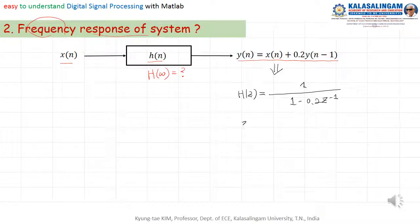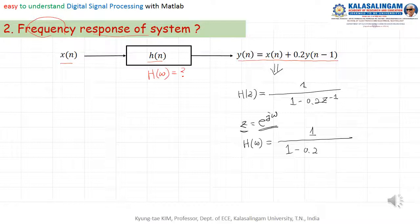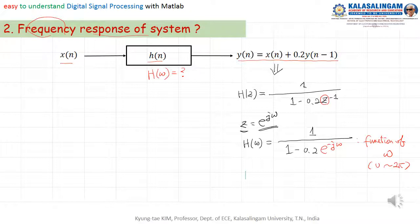Now, G means e to the power j omega. Therefore, we can substitute this instead of G. Therefore, H(omega) equals 1 divided by (1 minus 0.2 e to the power minus j omega). This is a function of omega, where omega means 0 to 2 pi. From this, we can get the amplitude spectrum and phase spectrum.